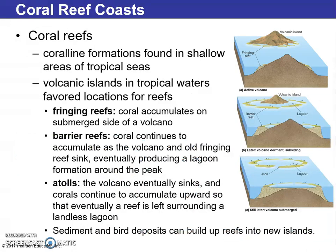There are different types of coral reefs. Fringing reefs accumulate on the submerged sides of a volcano. Barrier reefs form as coral continues to accumulate while the volcano and old fringing reefs sink. Atolls form when the volcano eventually sinks completely and coral continues to accumulate upward, leaving a reef surrounding a lagoon with no land. Sediment and debris deposits can also build up on reefs, forming new islands.